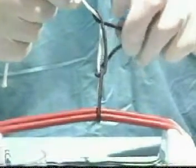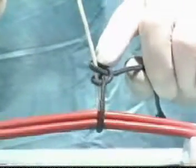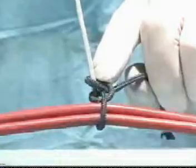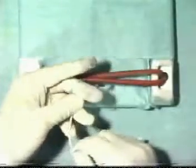And then a similar throw using the index finger again. Once these two throws have been cast, push them down into position using the index finger, tightening to the correct tension.